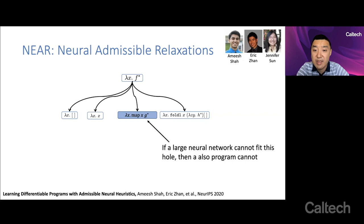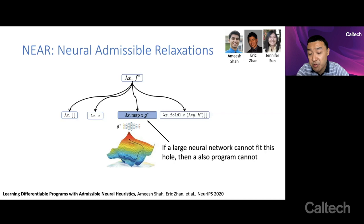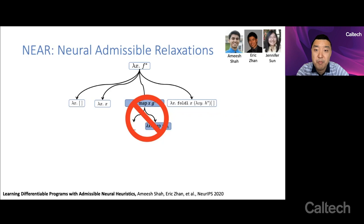If a large neural network cannot fill this hole well, then a neural symbolic program that completes this hole also cannot, because the neural network is strictly more expressive than a neural symbolic program. So we train a large neural network and try to see how well we can fit the data. And this is easy because it's continuous. And this is one of the reasons why deep learning is so scalable. So this step is typically very easy. And if it's not good enough, we prune it away. We now have a lower bound on the cost to go or an upper bound on the cost to go.